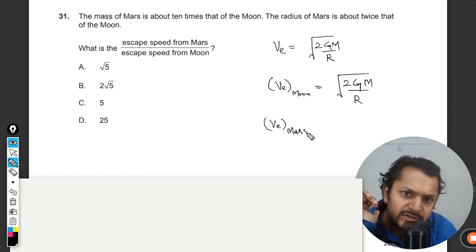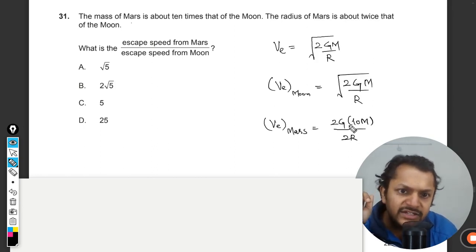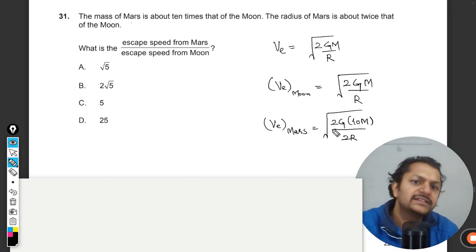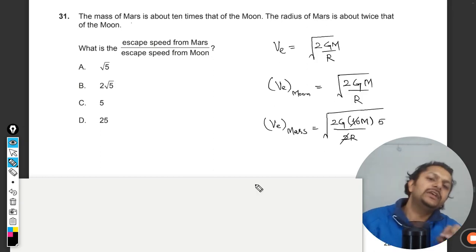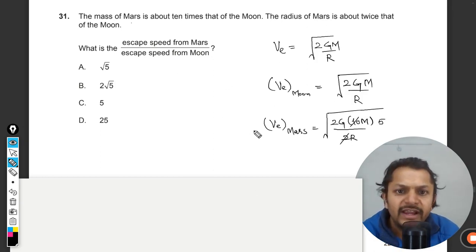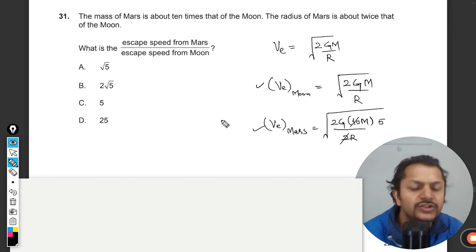The mass is 10 times that of the Moon, and the radius is double, so there is a factor of 5. If we divide this equation by that equation, you get the square root of 5.